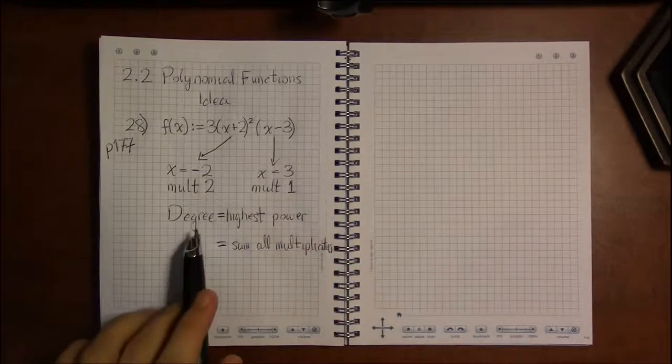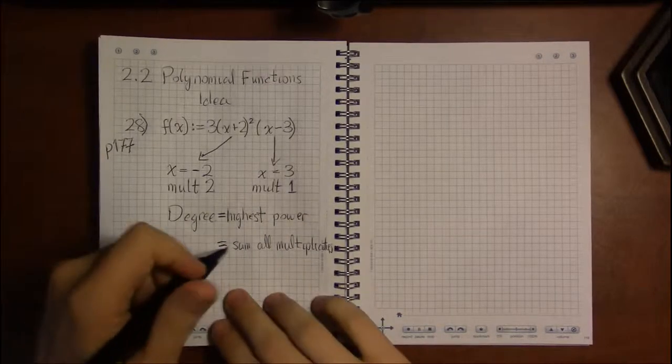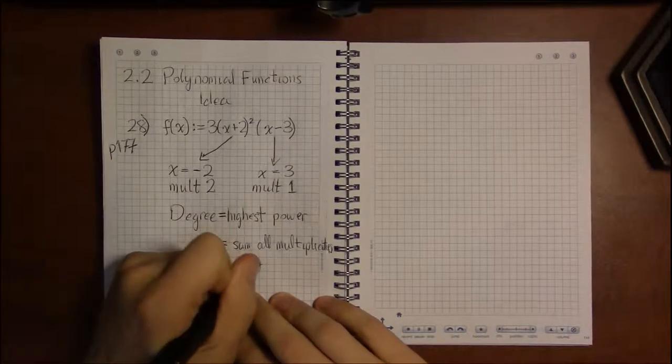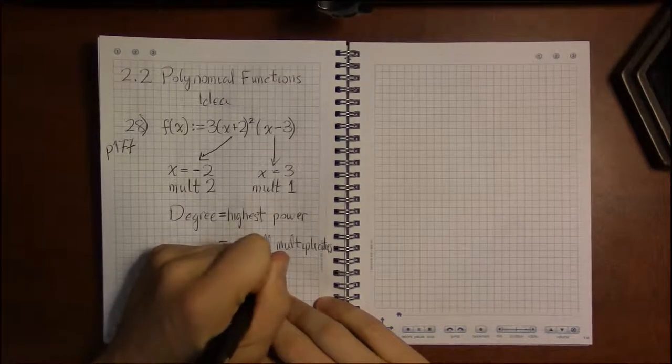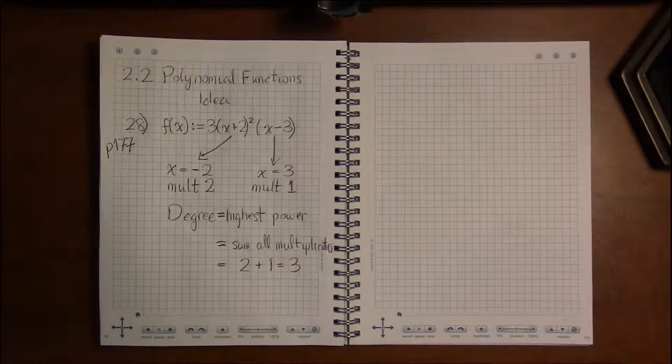So in this case, we have multiplicity 2, multiplicity 1, so the degree of this polynomial will be 2 plus 1, or 3. So this will be a degree 3 polynomial.